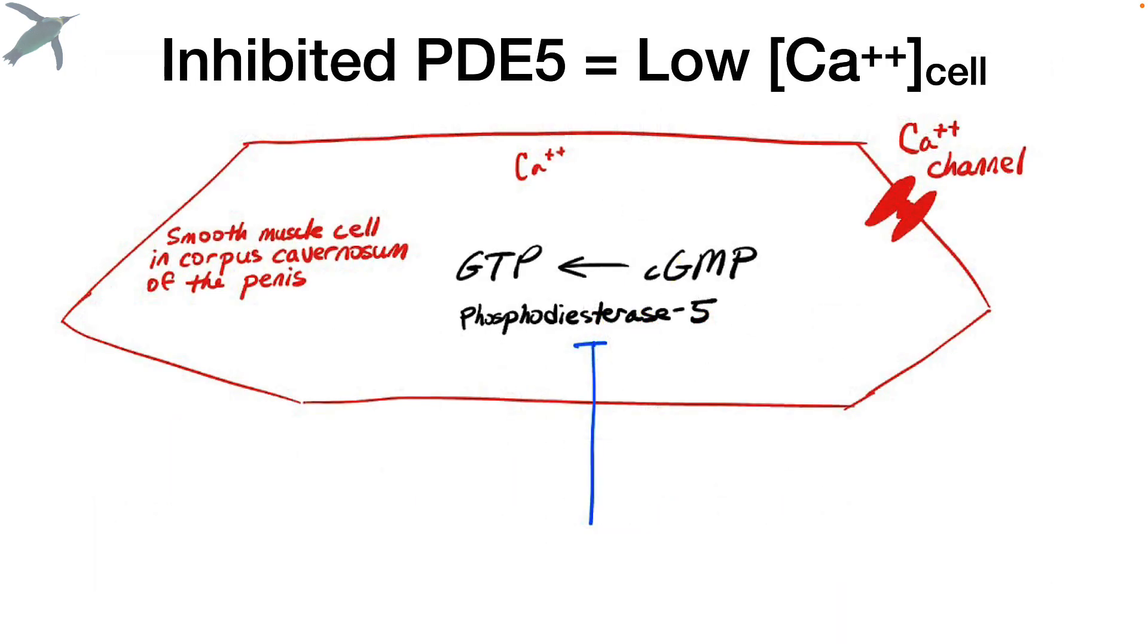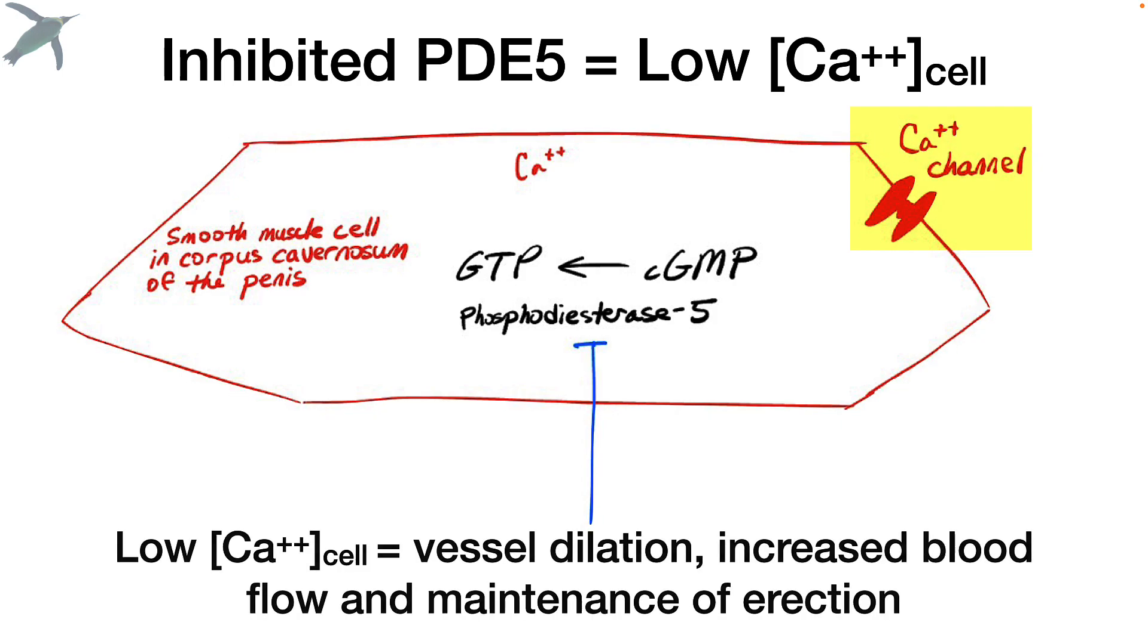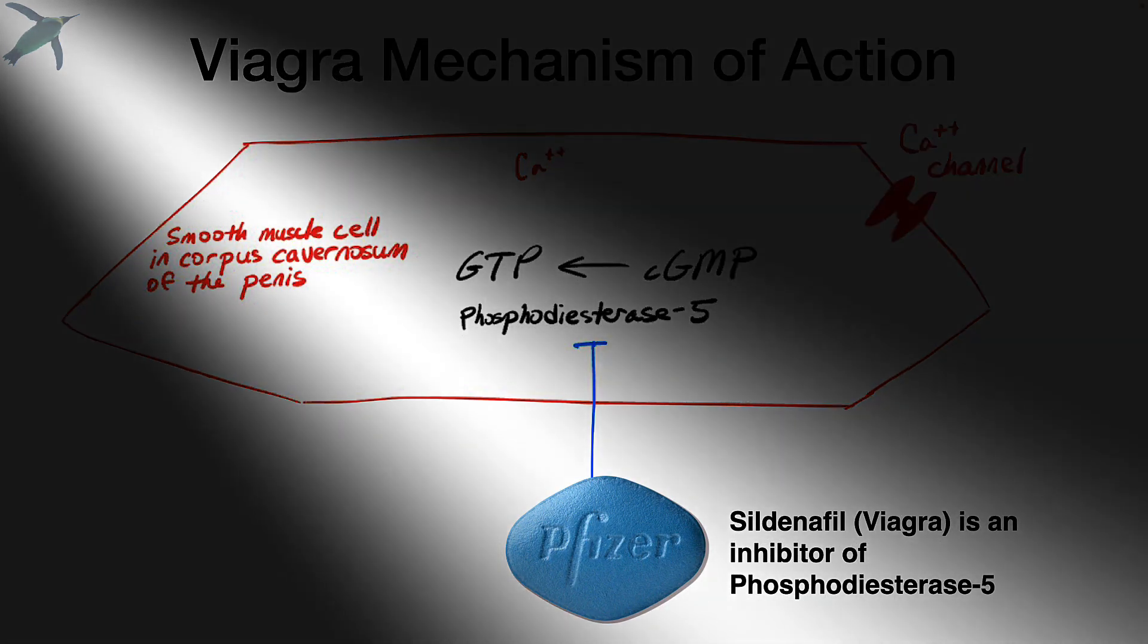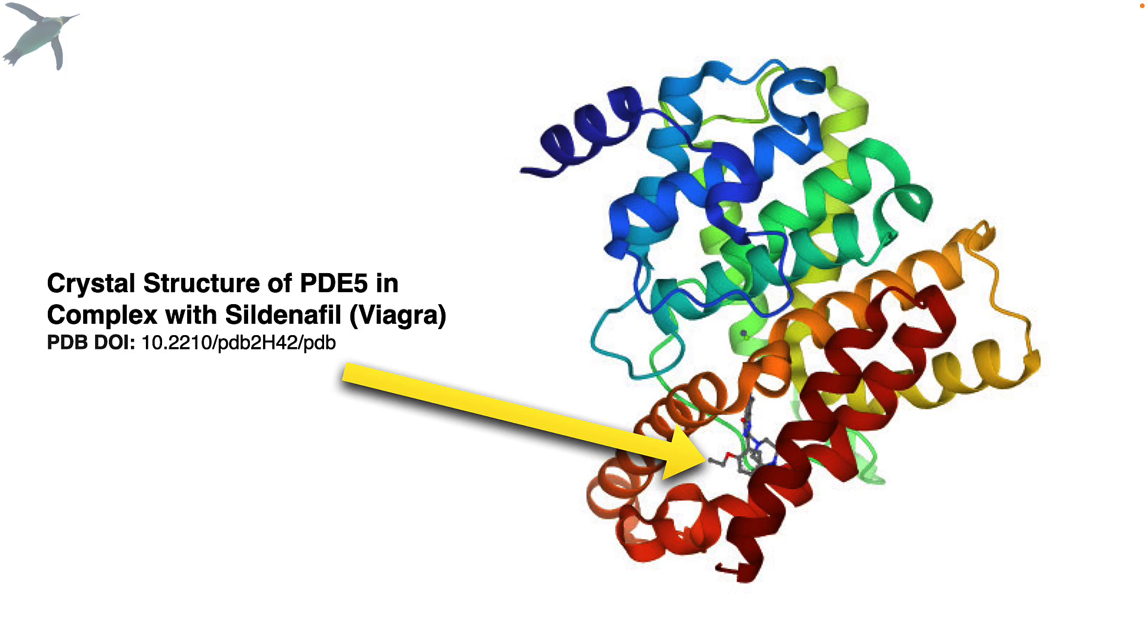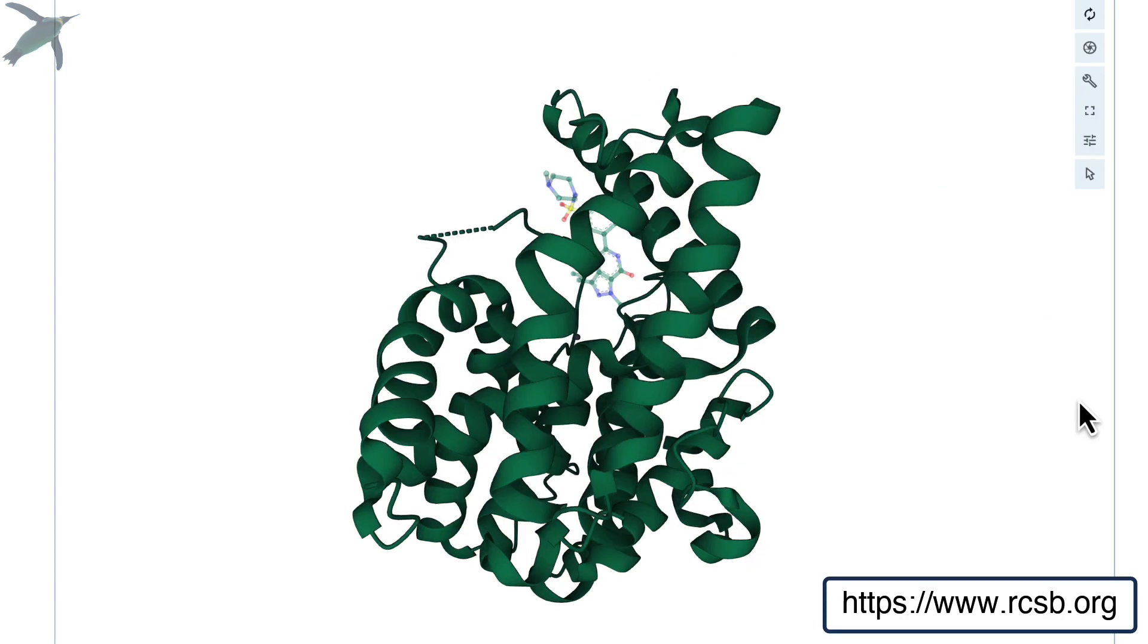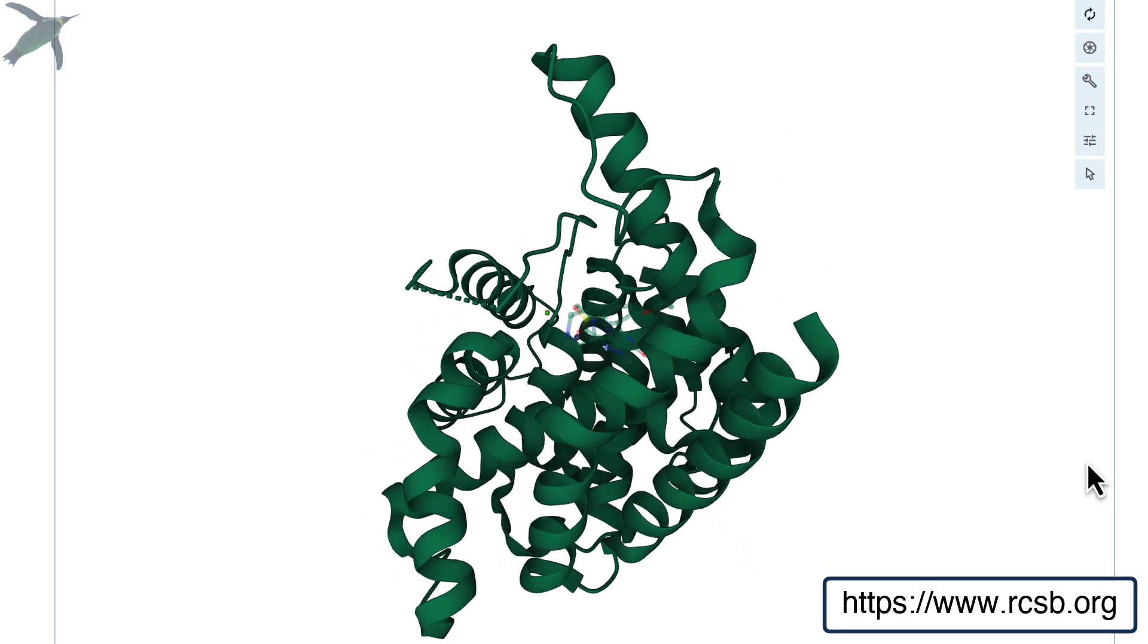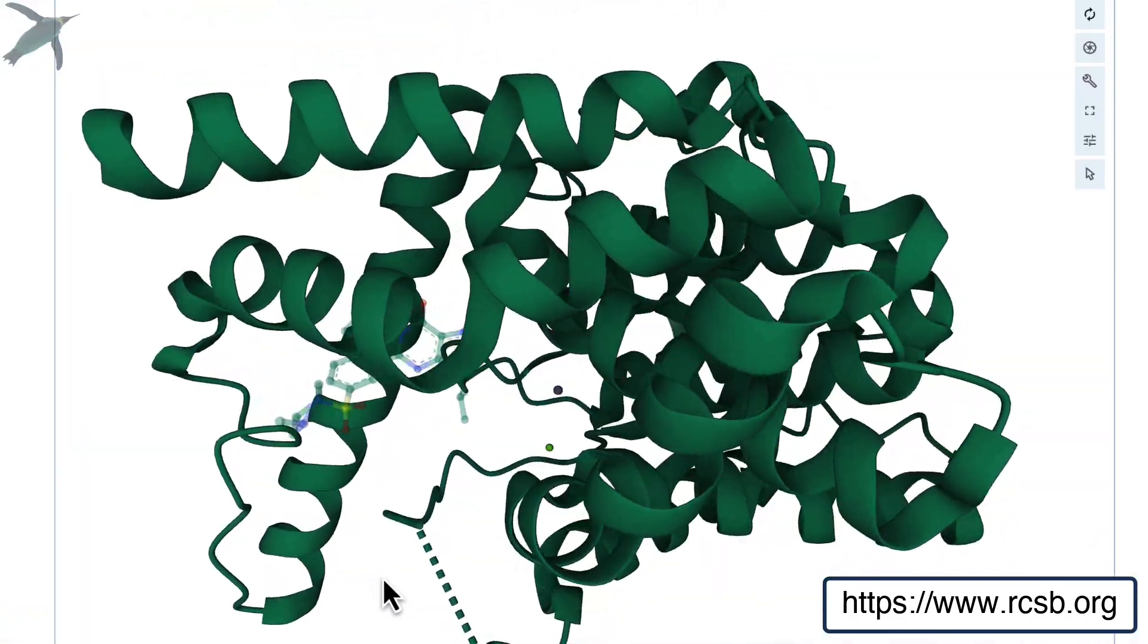If that enzyme is inhibited, you have a closed calcium channel, low calcium levels, vessel dilation, lots of blood flow, and a great erection. So all we have to do is figure out a way to inhibit that phosphodiesterase 5 enzyme. And guess what? That's exactly what Viagra does. Viagra is a PDE5 inhibitor. And here you can see in a crystal structure where the molecule sits in the whole enzyme. The question is, what kind of inhibitor is Viagra?